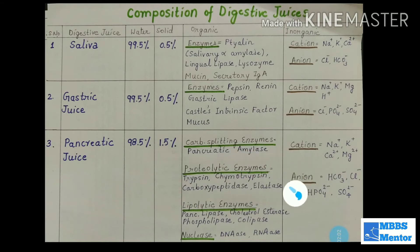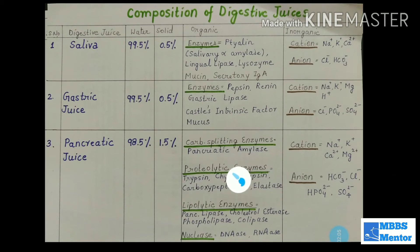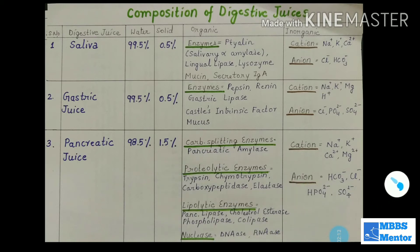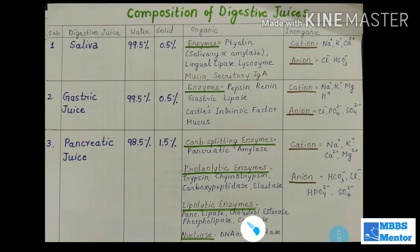Proteolytic enzymes, which act on proteins, include trypsin, chymotrypsin, carboxypeptidase, and elastase. Lipolytic enzymes, which work on fats, include pancreatic lipase, cholesterol esterase, phospholipase, and colipase.